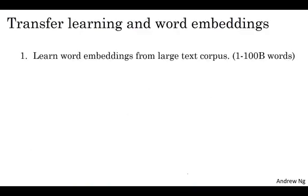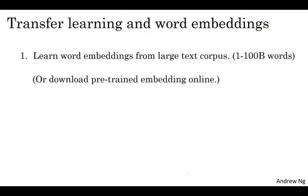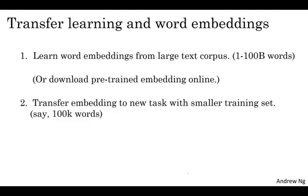Step one is to learn word embeddings from a large text corpus, very large text corpora, or you can also download pre-trained word embeddings online. There are several word embeddings that you can find online under very permissive licenses. And you can then take these word embeddings and transfer the embedding to a new task, where you have a much smaller labeled training set. And use this, let's say, 300 dimensional embedding to represent your words.